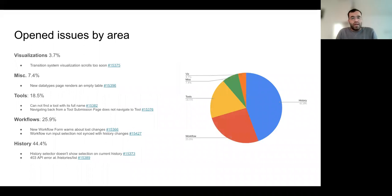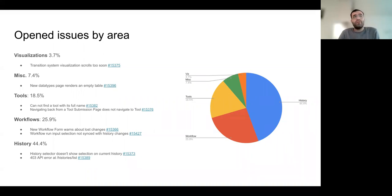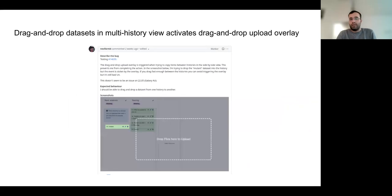If we categorize the opened issues by area, the most important area was history, then workflows, tools, and so on. History is the main key of Galaxy and has the most issues. For workflows, because we made great changes to the workflow during this release, we found numerous bugs related to workflows.